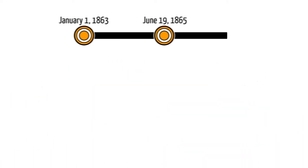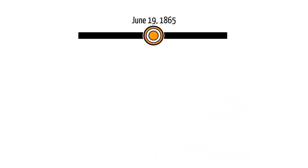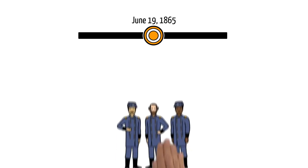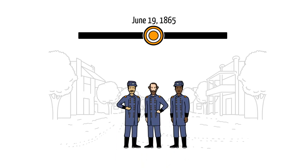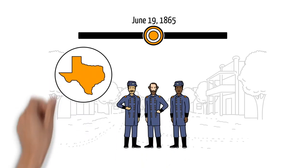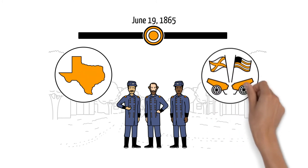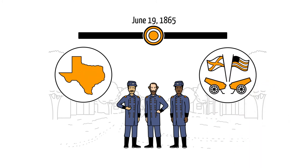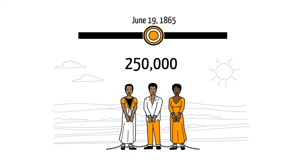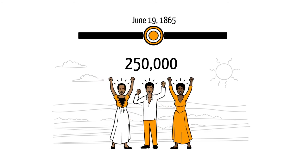Finally, on June 19th, 1865, Major General Gordon Granger arrived in Galveston, Texas, and announced that the Civil War had ended, and the more than 250,000 remaining enslaved people were now free, resulting in massive celebrations.